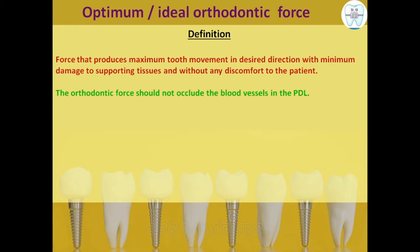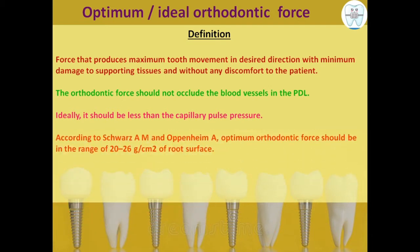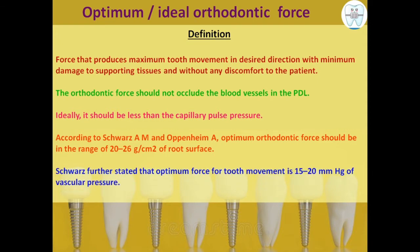The orthodontic force should not occlude the blood vessels in the PDL (periodontal ligament), as that would lead to hyalinization. Ideally it should be less than the capillary pulse pressure. According to Schwarz, optimum orthodontic force should be in the range of 20 to 26 gram per centimeter square of root surface, and optimum force for tooth movement is 15 to 20 mmHg of vascular pressure.